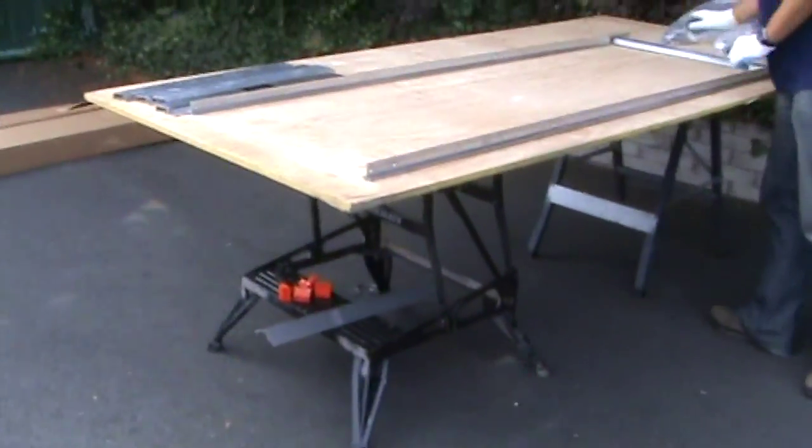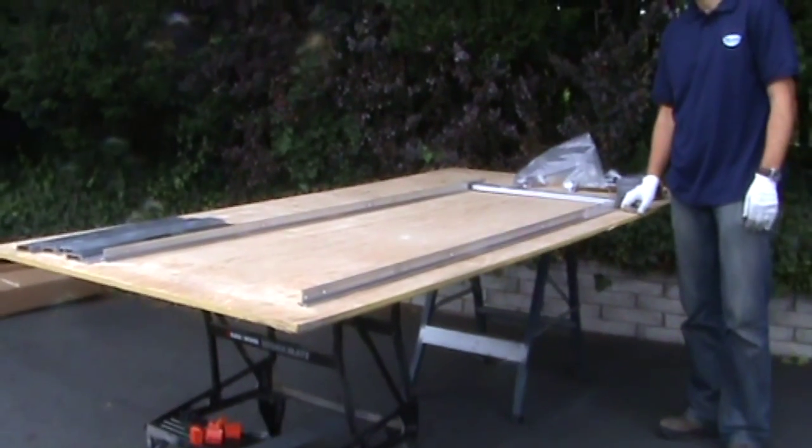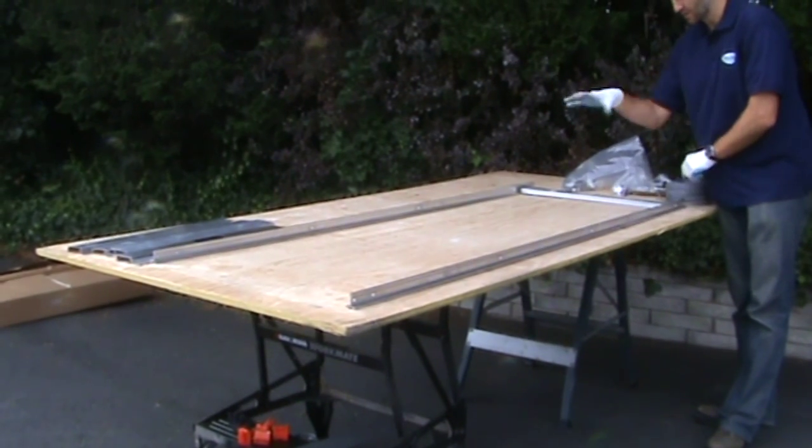The first thing we need to do is fit beading where glass is going to be positioned. Beading needs to go on the inside of both door posts and not the outside.